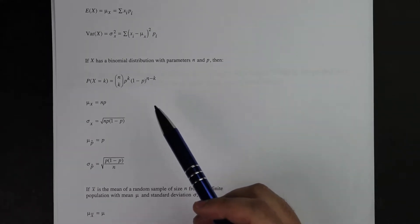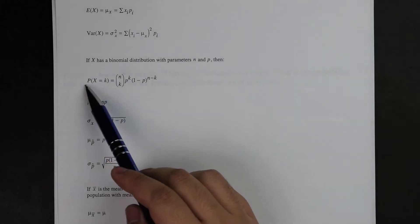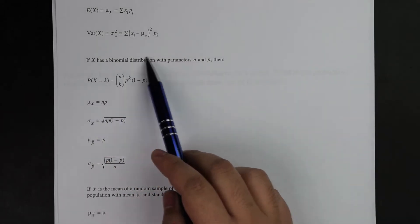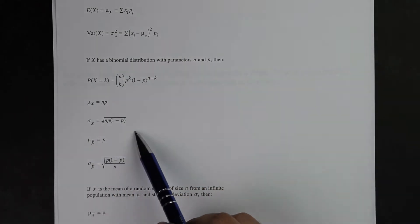Underneath it are the equations that they provide. So this is the primary equation for the binomial distribution. This is the mean and standard deviation. And that's the main important things you need to know for the binomial distribution.